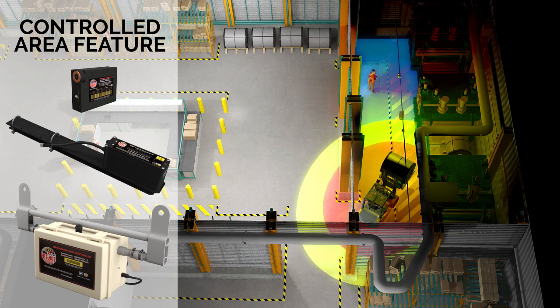where pedestrians and equipment cannot be in the zone at the same time. Overhead lights will flash when the exclusion zone is violated.